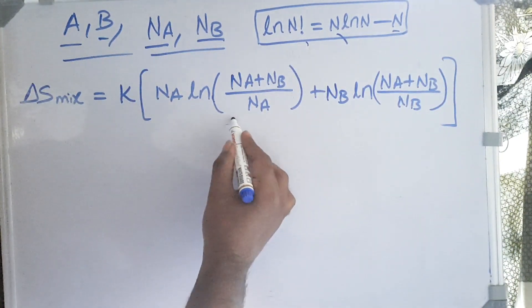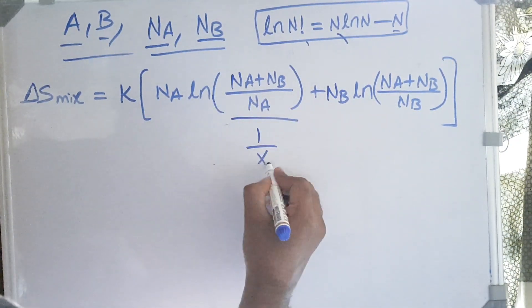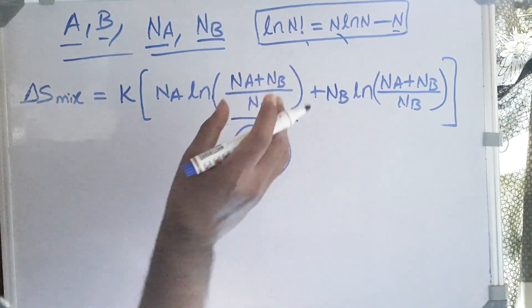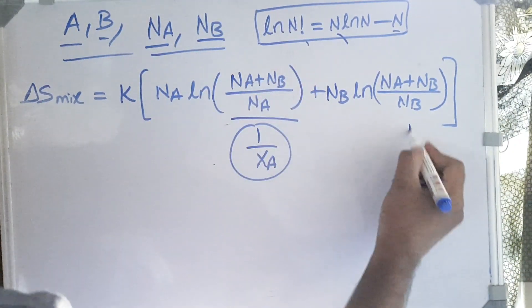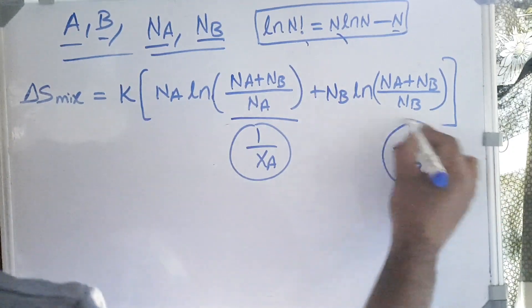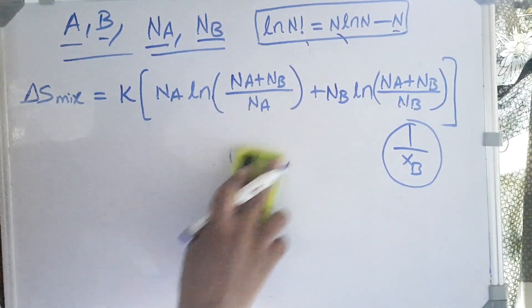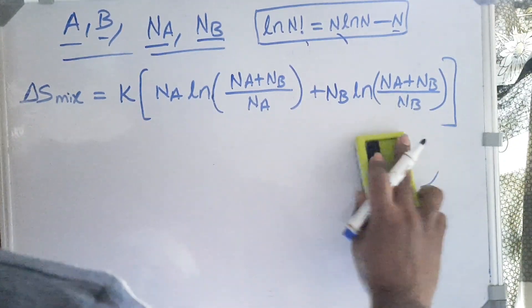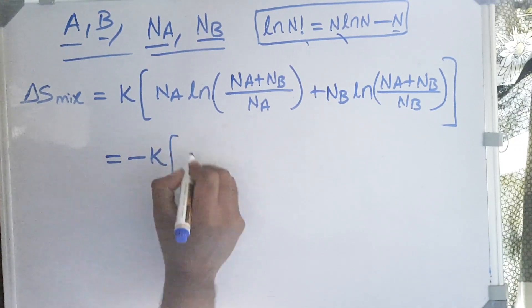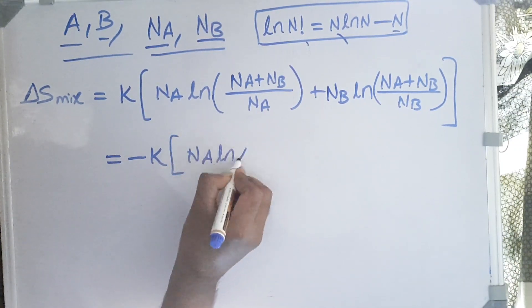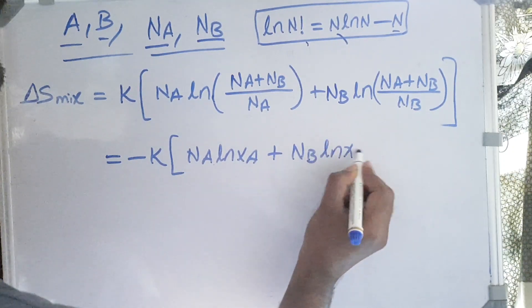After applying the logarithm formula here, we can say this is nothing but 1/XA. Na divided by total number of atoms is mole fraction. Since it is in the reverse, it is 1/XA and 1/XB. So ln(1/XA) we can write as minus ln XA. So if we take minus as common, we can write it as -K[Na ln XA + Nb ln XB].